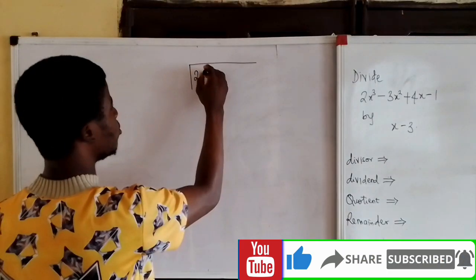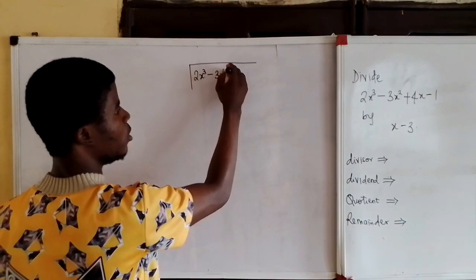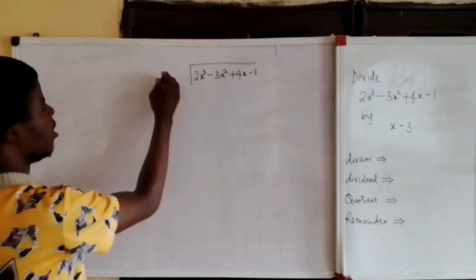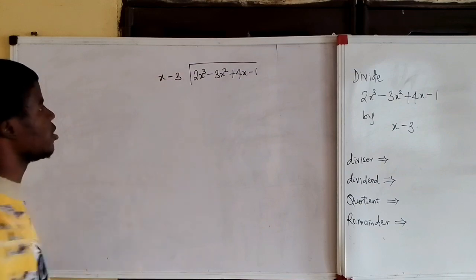2x cubed minus 3x squared plus 4x minus 1. I am dividing it by x minus 3. So we go.